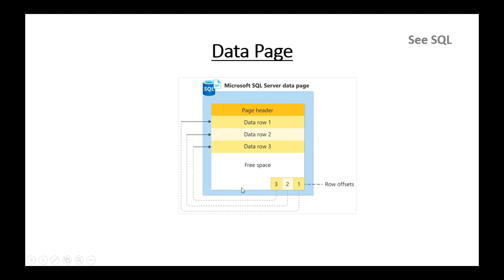Every page's footer points to the next page. The collection of these eight pages is known as extents. In extents, all 8 pages are not created together; that depends on the requirement of storing the data. When a data page is full, it will create another page in the extent — this is known as a page split.